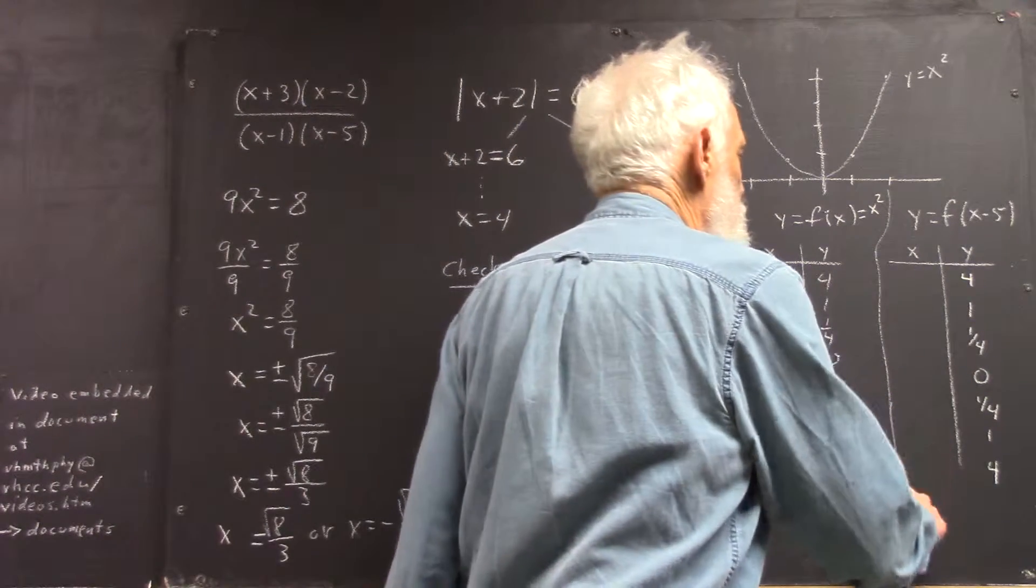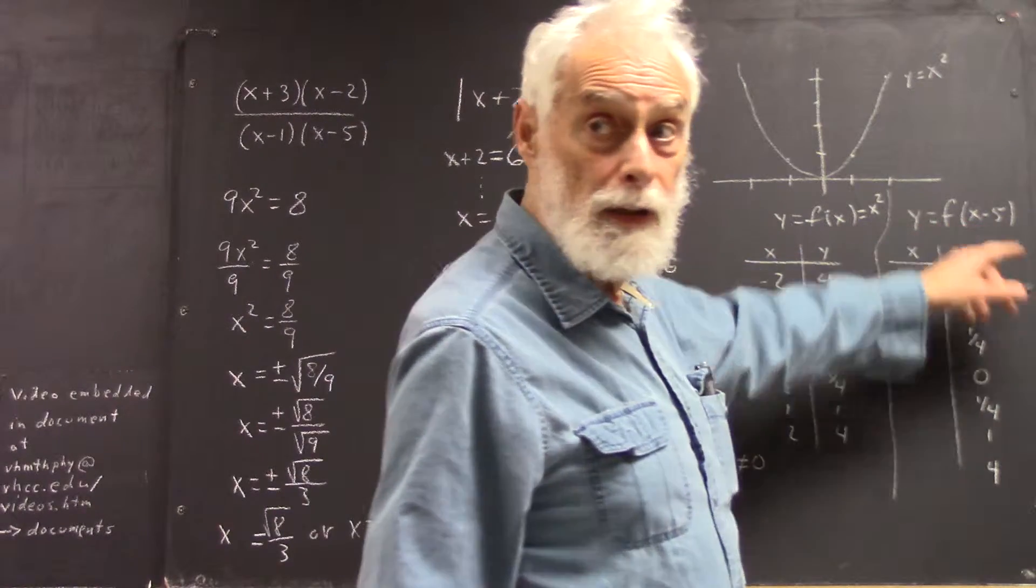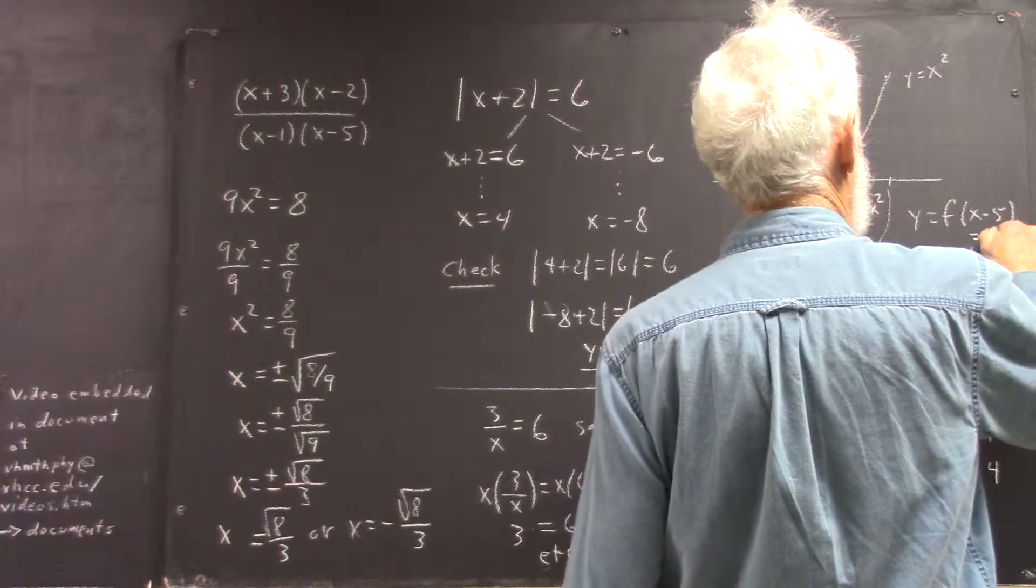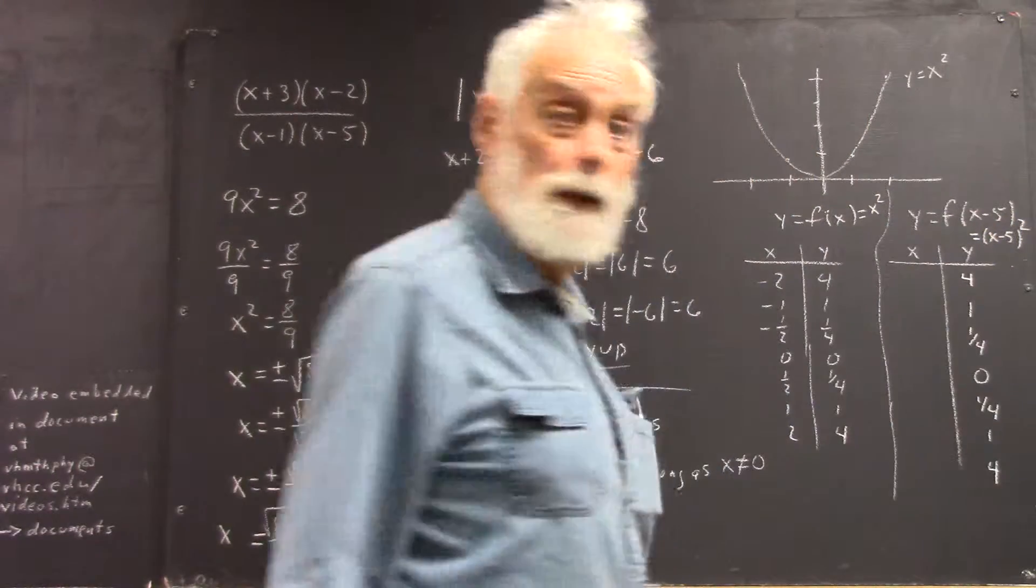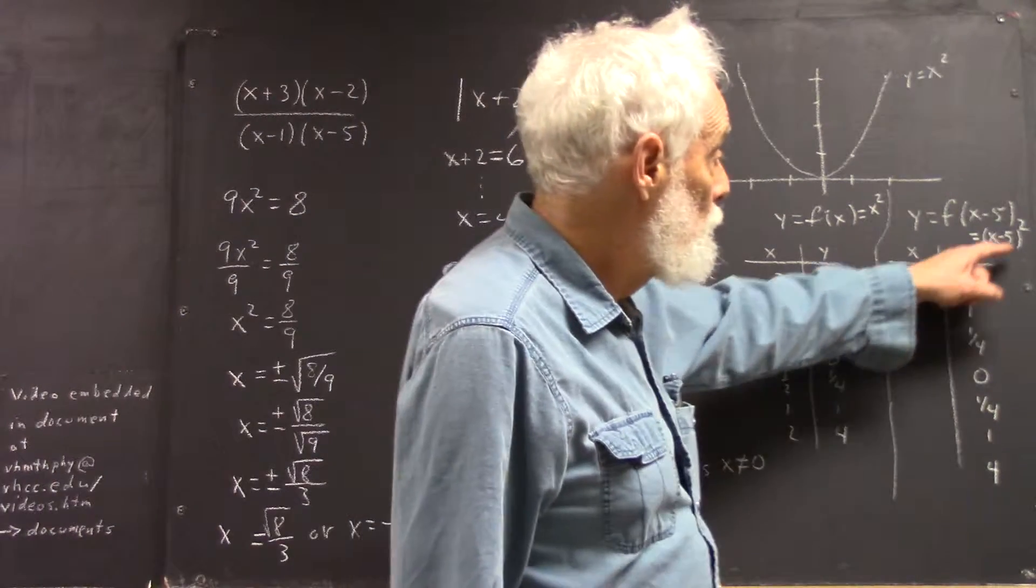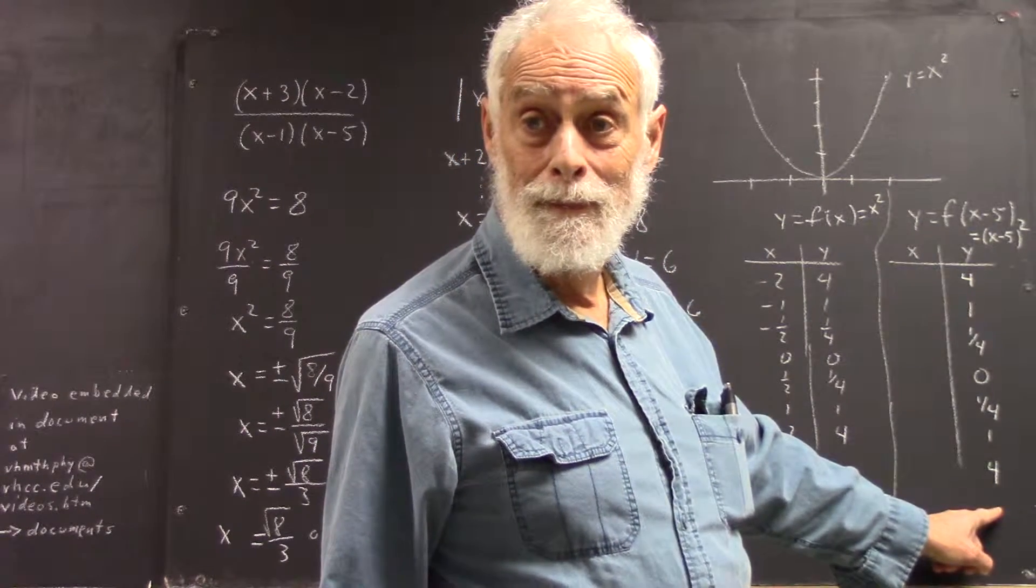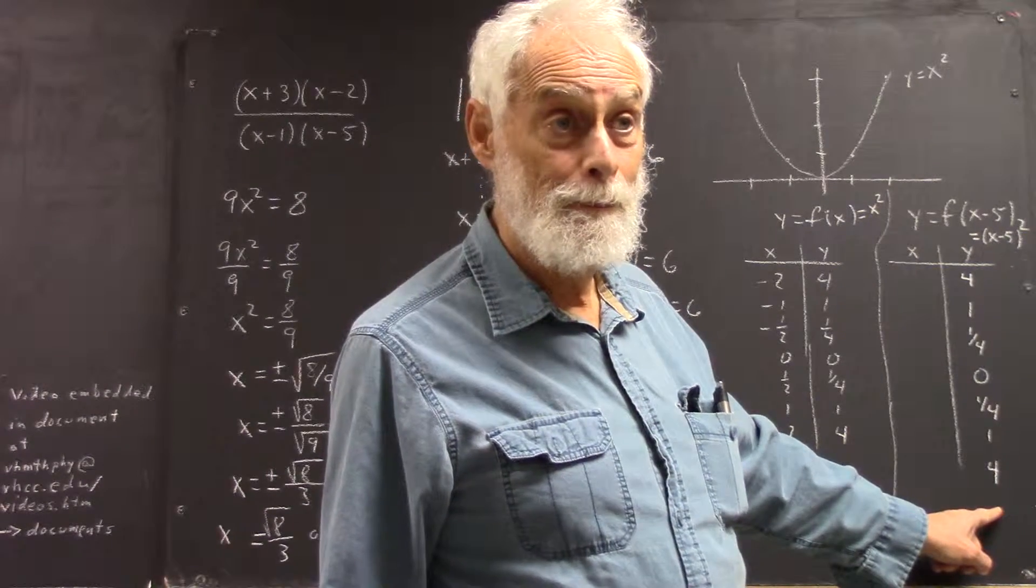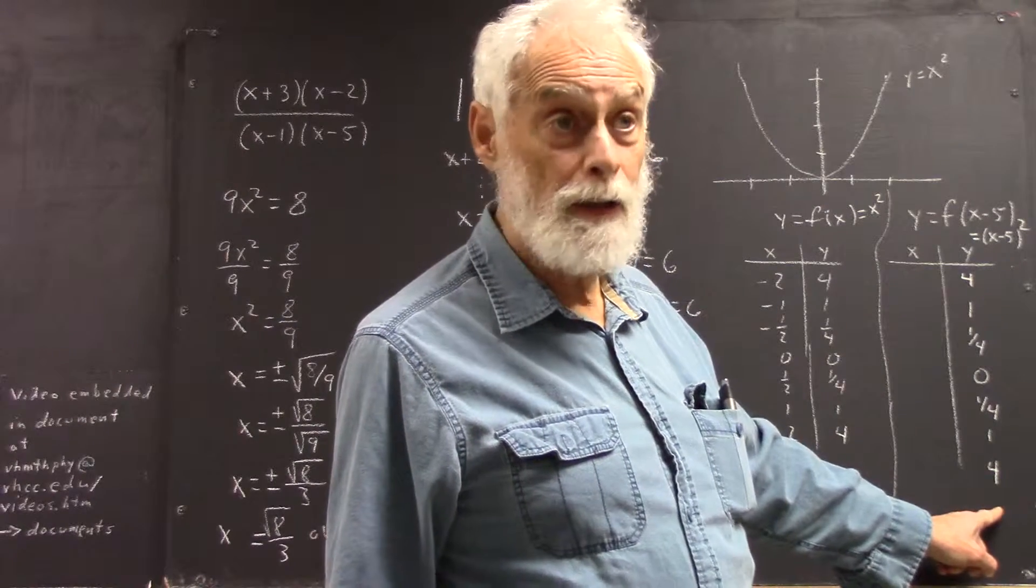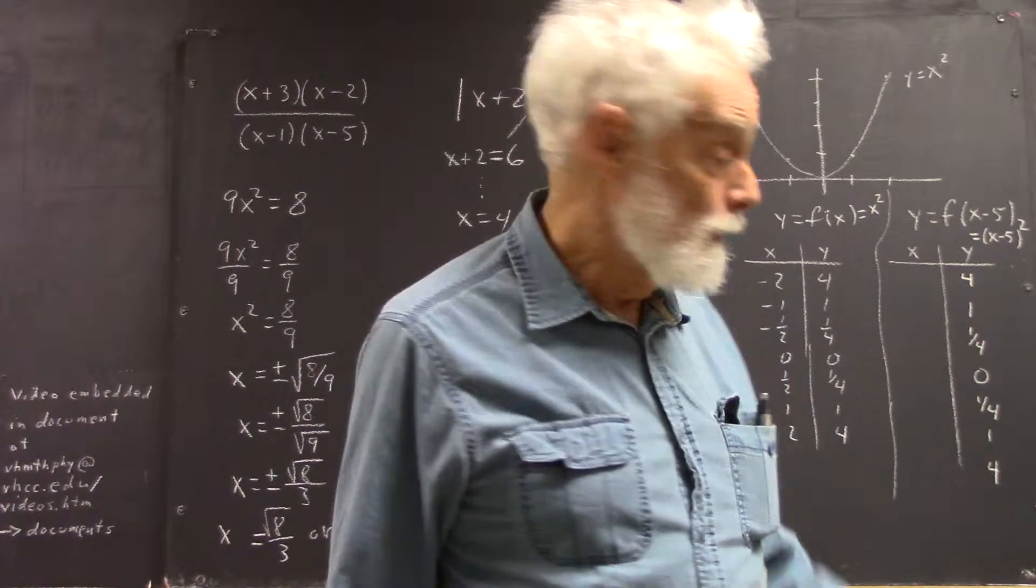Now, what x value would give you 4 for the function f of x minus 5? Well, first of all, let's just go ahead and say that's x minus 5 squared, right? So now that we see what the function is, we ask, well, what would we have to square in order to get 4? And what would our answer be? 2. That's one answer. What's another answer? Negative 2, right?